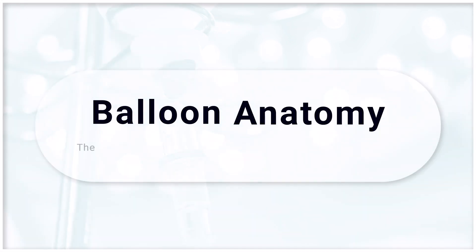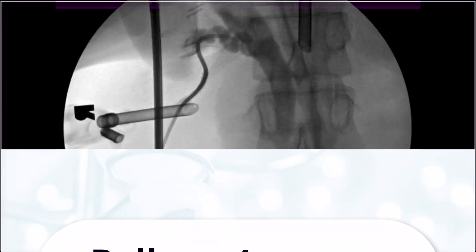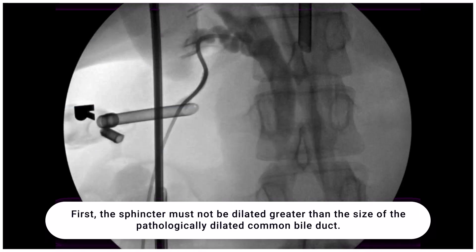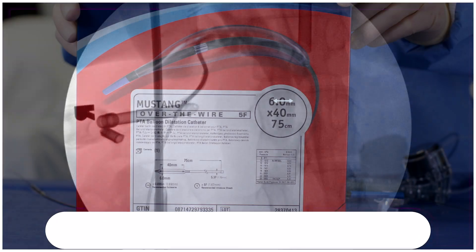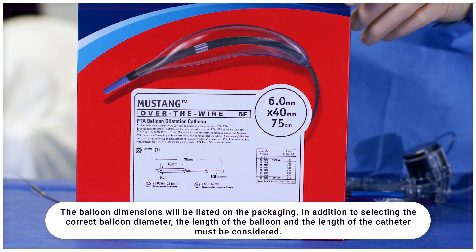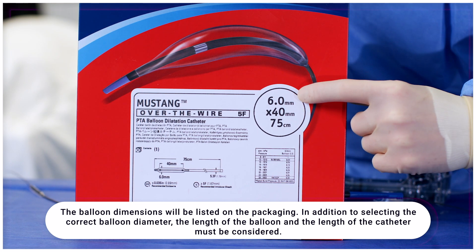The correct non-compliant dilating balloon must be selected to avoid complications and facilitate ease of intervention. For balloon size, the sphincter must not be dilated greater than the size of the pathologically dilated common bile duct. The balloon inflation profile diameters come in a variety of sizes, typically ranging from 6 millimeters all the way up to 10 millimeters.